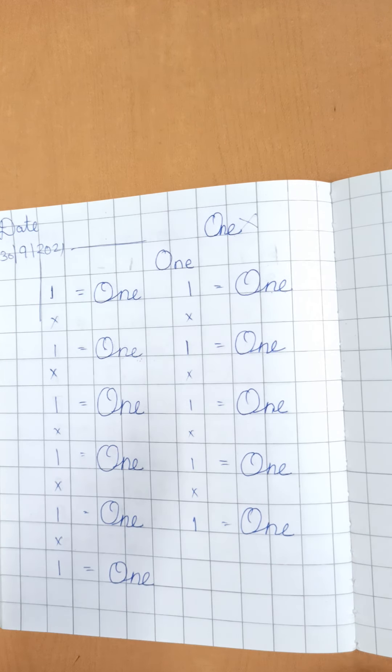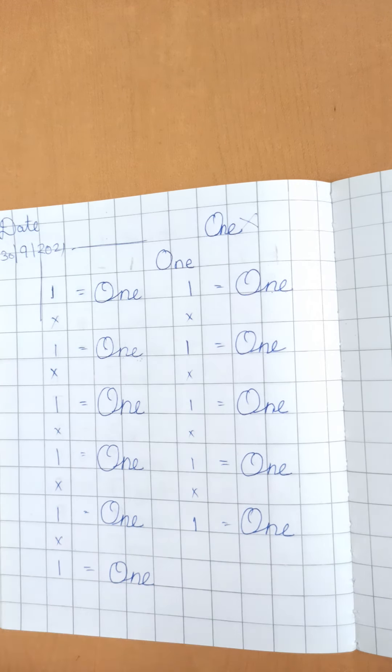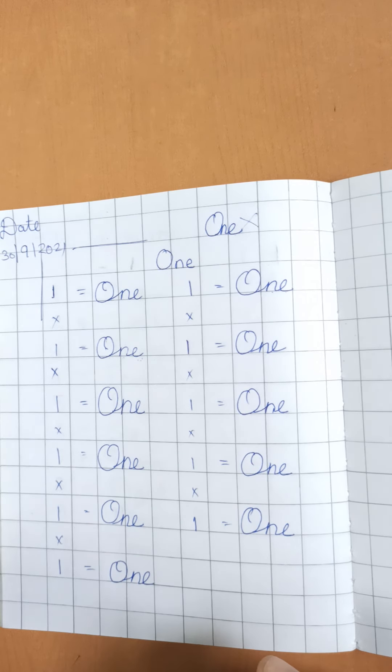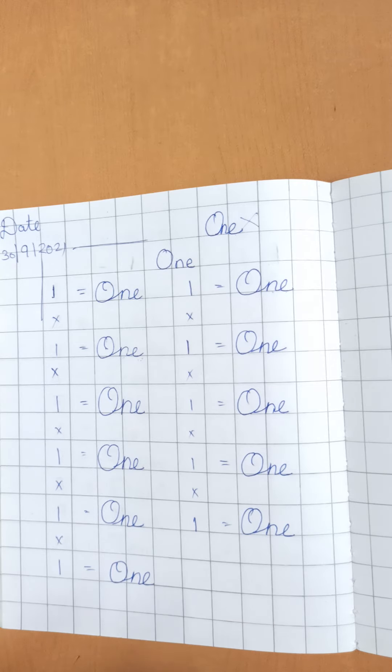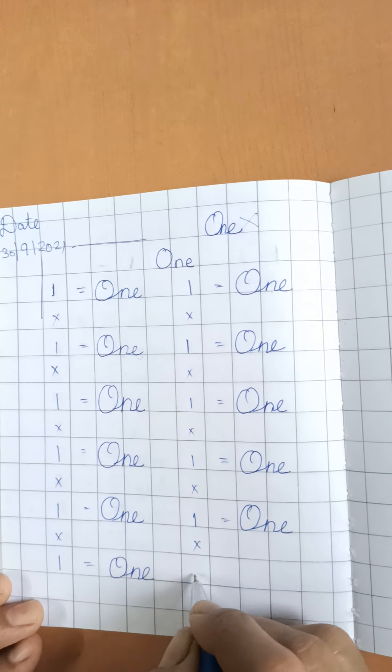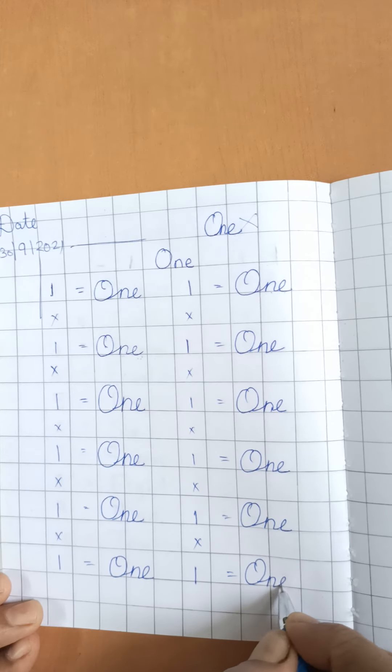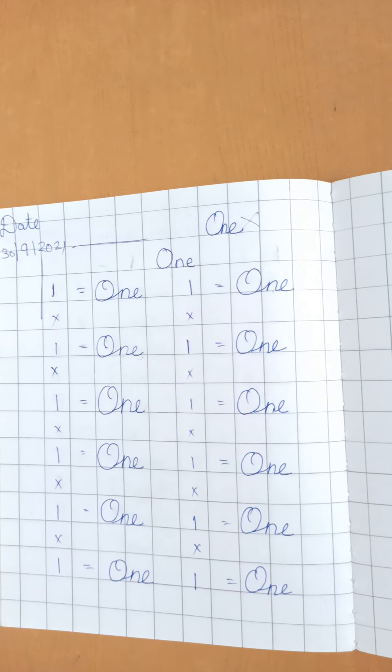Niche daba ke N nahi likhna hai. Aapne aapne letter ki ek khud ki ek value hai. Khud ki ek jaga hai. To har ek letter aapni jaga pe hona chahi hai. One is equal to O, N, E, 1.